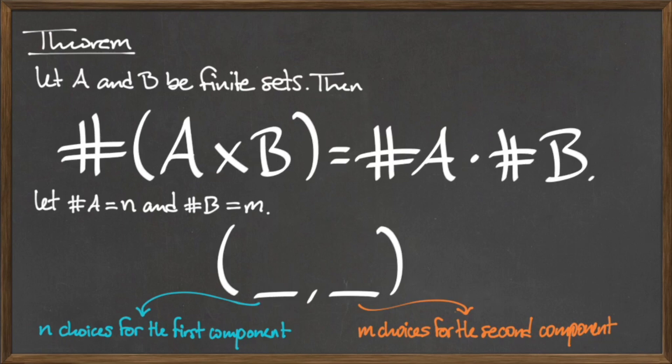there are N times M possible combinations of ordered pairs. Since N is equal to the cardinality of A and M is equal to the cardinality of B, there are cardinality of A times cardinality of B possible ordered pairs in the Cartesian product.